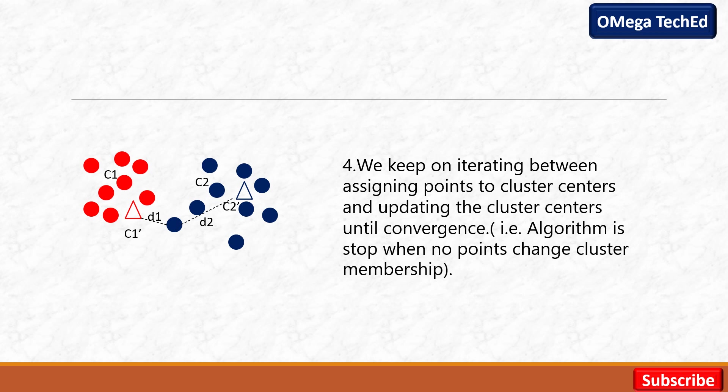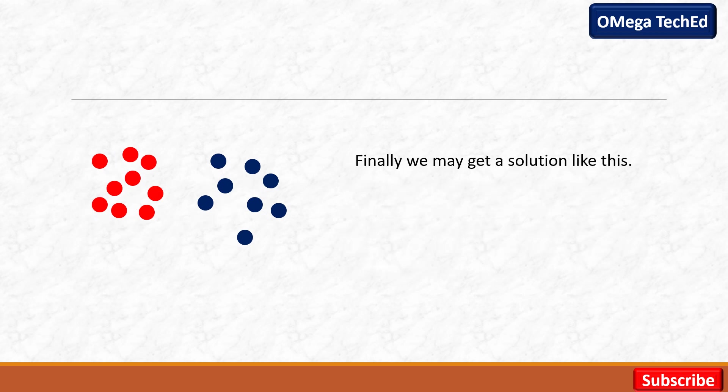When we reach the stage where no data points change their cluster membership, we stop the algorithm. Finally, after performing a number of iterations, we get the solution. Here we have two clusters — one red cluster and one blue cluster.